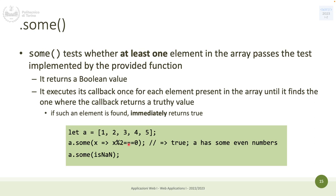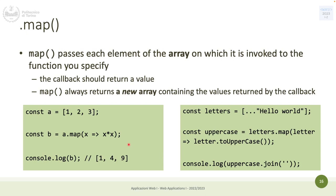'map' is the first method that generates a new array — the other being 'filter'. map takes each element of the array on which it's invoked, and for each element executes the callback. The callback in map should return a value. map always returns a new array containing the values returned by the callback. For example, with the array [1, 2, 3], map can multiply each element by itself.